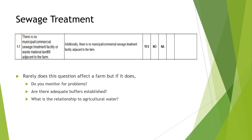Sewage treatment 1-7: There is no municipal or commercial sewage treatment facility or waste material landfill adjacent to the farm. Rarely does this question affect a farm, but if it does: Do you monitor for problems? Are there adequate buffers established? What is the relationship to the agricultural water? Since this is such a rare case, circle yes and provide the answer in the block: 'There is no municipal or commercial sewage treatment facility adjacent to the farm. There are no waste material landfills adjacent to the farm.'